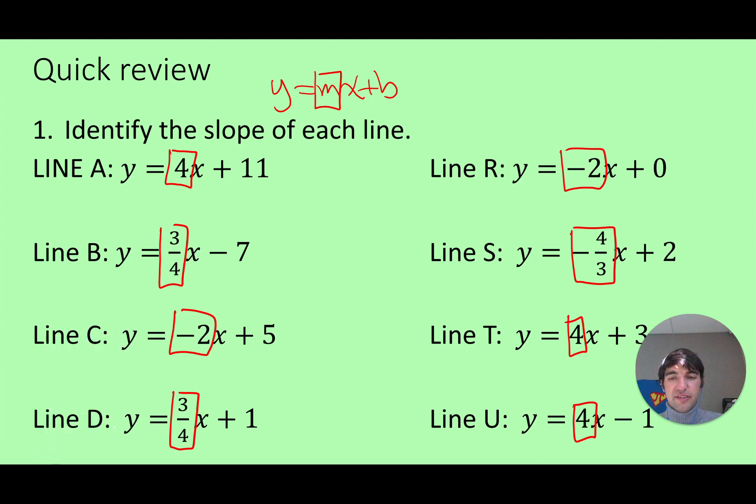Now a natural extension is we talked about parallel lines yesterday. So can I find some lines that are parallel? Remember parallel lines have the same slope. How about, looks like A parallel to T both have a slope of 4. A is parallel to U both have a slope of 4. T is parallel to U both have that same slope. So actually all three of those are parallel to each other.